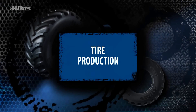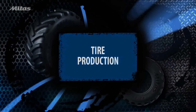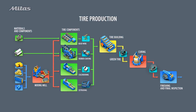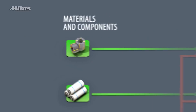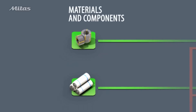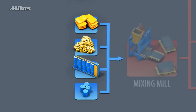This section explains how tires are produced. These are the main stages of tire production. The basic components in tires are steel wires and cord, natural and synthetic rubber, and various chemicals including carbon black.